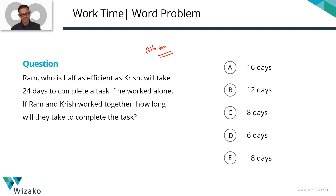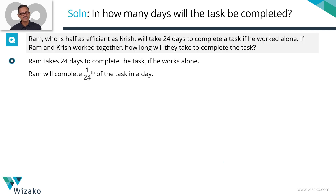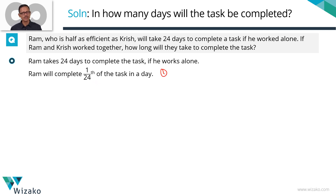Let's get the first data point. How long does Ram take to complete the task? He takes 24 days if he worked alone. So in a day, Ram will complete 1/24th of the task. This step is a straightforward one that we do with any rates and work-time question.